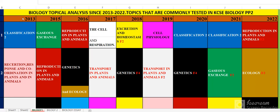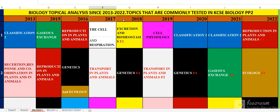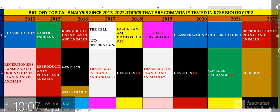As you can see here, the first column has years from 2013, 2015, 2014 is not there, so we have 2015, 2016, 2017, 2018, 2019, 2020, 2021, and finally 2022. I have given different colors to different topics. Classification is blue, gaseous exchange is blue, reproduction in plants and animals is red, and white represents the cell and respiration. We also have excretion and homeostasis for Form 2 work.